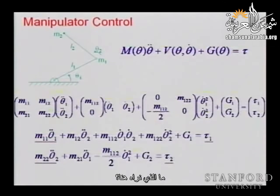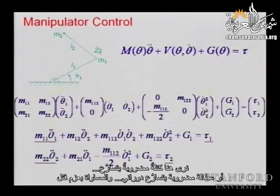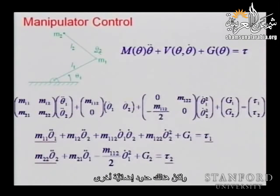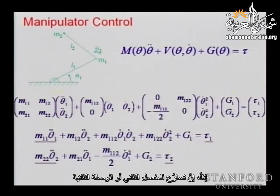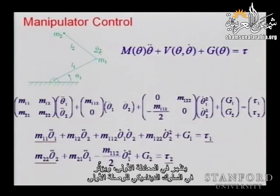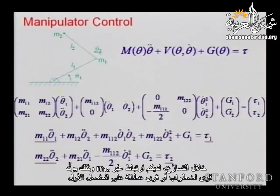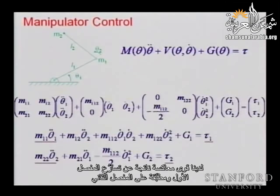What do we see? We see mass acceleration — inertia, rotational acceleration — equal torque. But there are all these additional terms appearing. The acceleration of joint two is appearing in the first equation and affecting the dynamic behavior of the first link. As you accelerate, you have coupling through M12, producing disturbance or inertial forces on the first joint. We also have opposing forces from the acceleration of joint one on joint two.